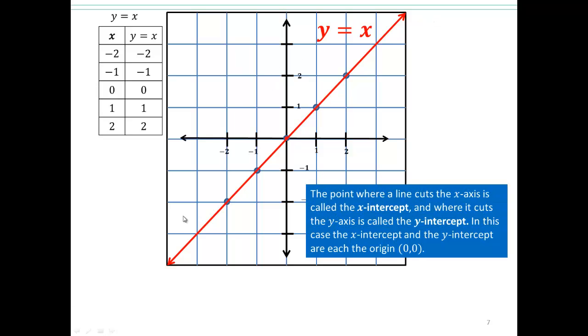The point where this line cuts the x-axis is called the x-intercept, and where it cuts the y-axis is called the y-intercept. In this particular case, zero, zero is the x-y-intercept. Since both x and y-intercepts are zero, you are actually at the origin.